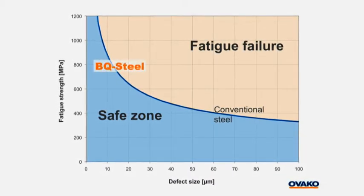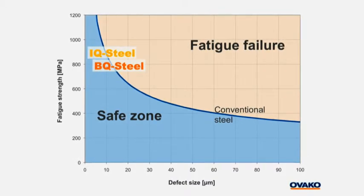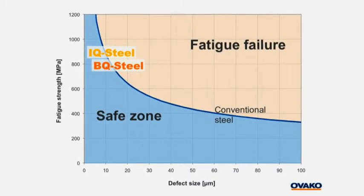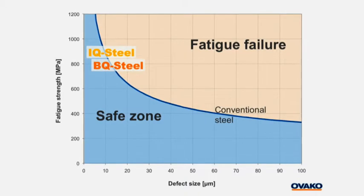The second webcast describes the BQ steel. This presentation will describe the IQ steel, which stands for Isotropic Quality Steel. Similar to BQ steel, it has significantly smaller inclusion size distribution compared to conventional steel. But IQ steel also exhibits excellent properties regardless of which direction it is loaded.